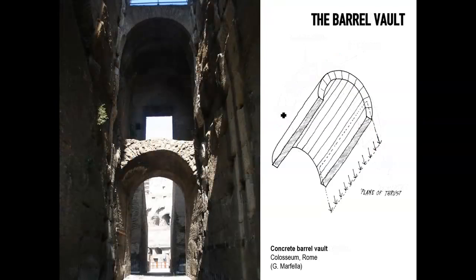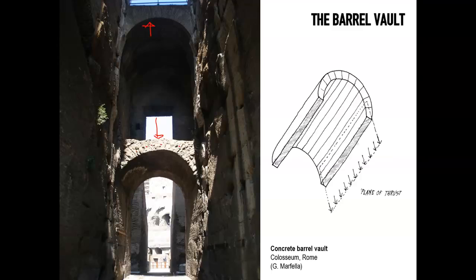The same principle of the arch can be used by extruding that shape along one direction, creating the barrel vault. This is the barrel vault of the Colosseum — you can recognize the Roman concrete approach with rubble and pozzolanic cement, but also plenty of barrel vaults built using the technique of Opus Testaceum — fired bricks.